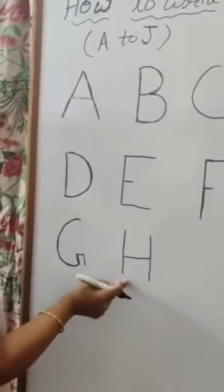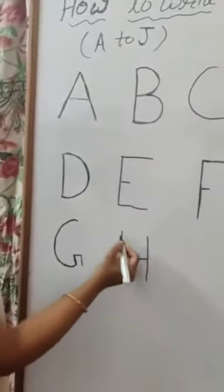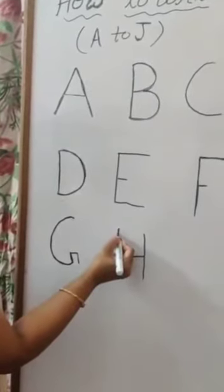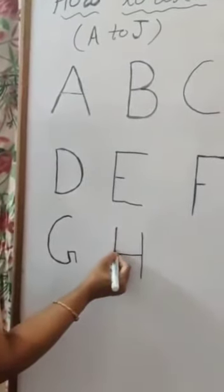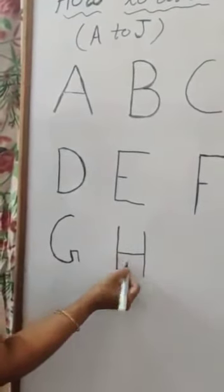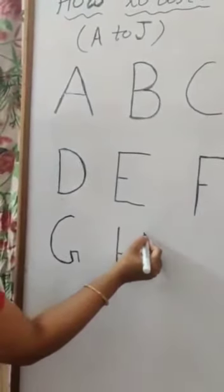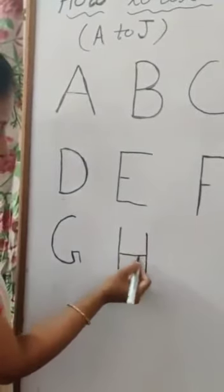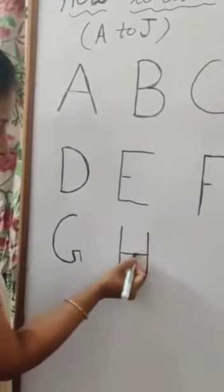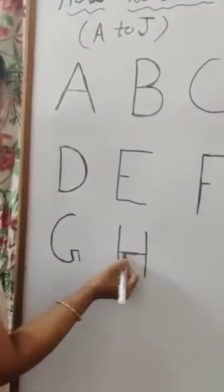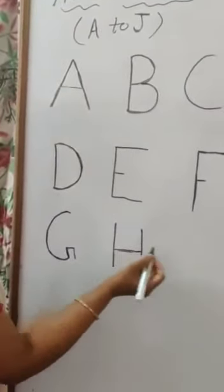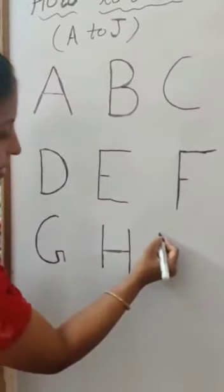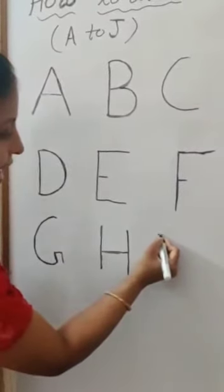H for horse. One standing line, one more standing line, and one slipping line — H. And next is I.